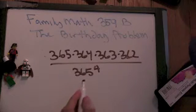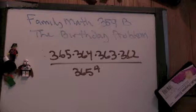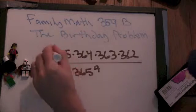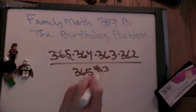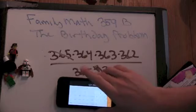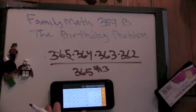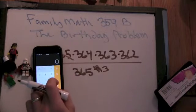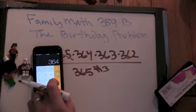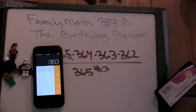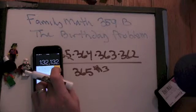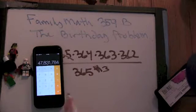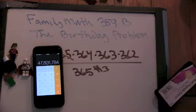So let's do the calculation. What can we do first before we plug it into the calculator? We can cancel 365 — we can cancel one 365 — that simplifies it just a little bit. So we get 364 times 363, which is 132,132. Times 362. So that's 47,831,784.